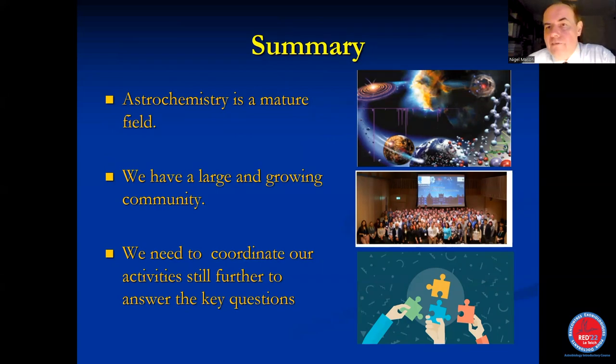So in summary, astrochemistry is now a mature field. We have a large and growing community, as seen in the picture at the bottom here in a meeting pre-pandemic, when the community could all get together to discuss these things. What we do need to do, and I hope I've shown in this talk, is to coordinate our activities still further, to make sure that the experiments can be cross correlated, cross-compared. That we can adopt similar processes and ways to study our things, like for example adopting systems chemistry. That the experiments can be coupled with models, so we have an idea of what sort of compounds we should get when we irradiate these ices under particular conditions.